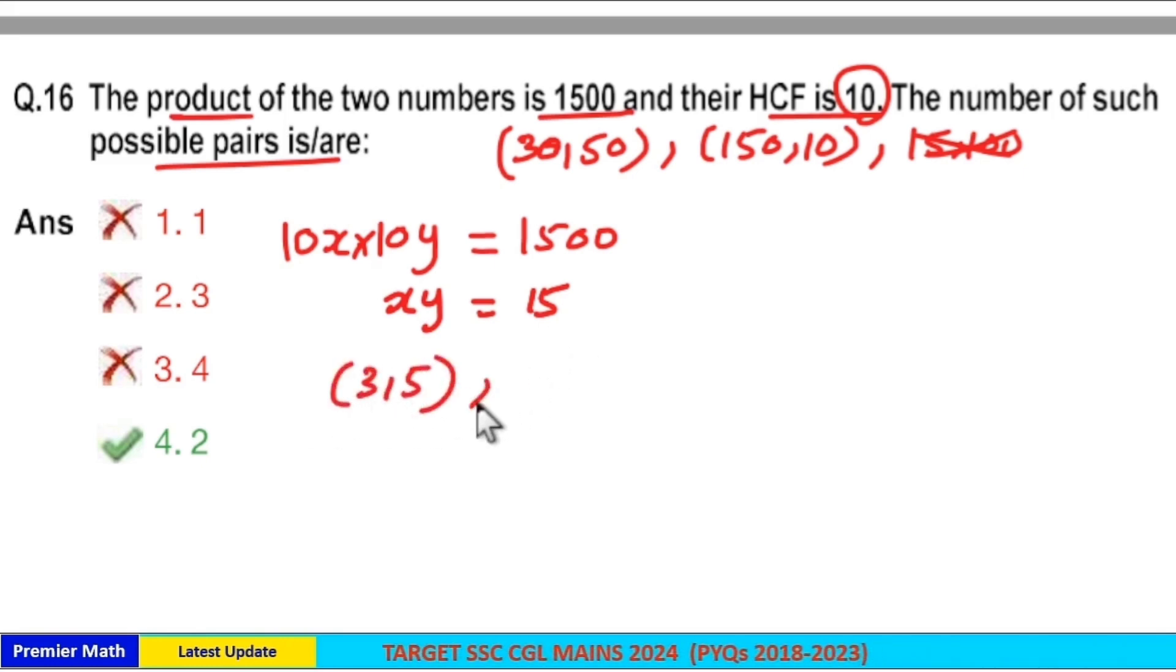So, 3 and 5 coprime. 3 into 5 is 15. 1 and 15 coprime. So, only two such pairs are possible.